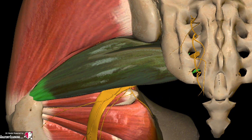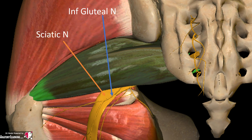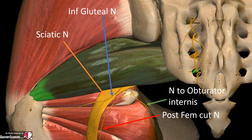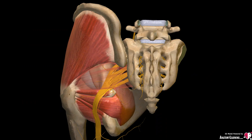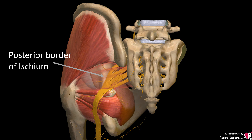The major branches of the sacral plexus coming inferior to the piriformis are the inferior gluteal nerve, the sciatic nerve, the posterior femoral cutaneous nerve, the nerve to obturator internus, and the pudendal nerves. When the piriformis is reflected, the sacral plexus lies medial to the posterior border of the ischium — this is where we describe our innovative approach to block the sacral plexus.